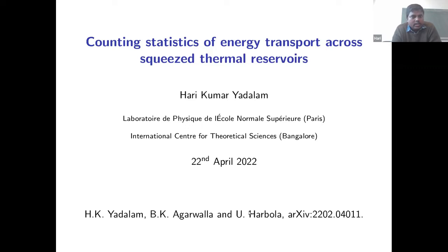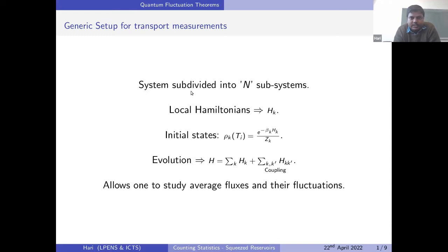Typically in transport measurements, we think of a system which is subdivided into n subsystems, each with some local Hamiltonian. We can prepare each subsystem in a local thermal state, and then subject it to evolution with some coupling. This allows us to study average fluxes and fluctuations.